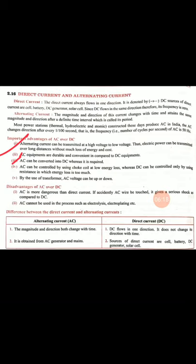The third advantage is that AC can be converted into DC where it is required. In many appliances we need direct current, but we have alternative current available, so we can easily convert AC to DC.